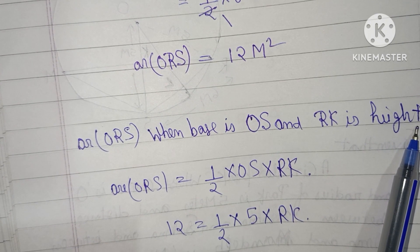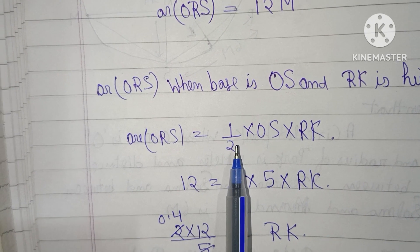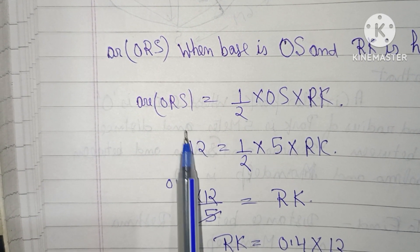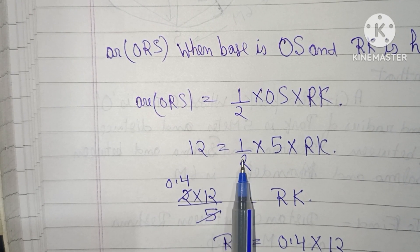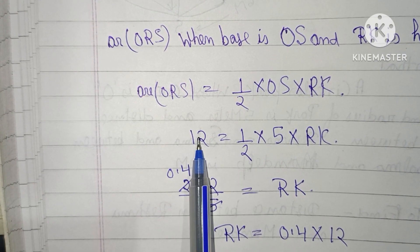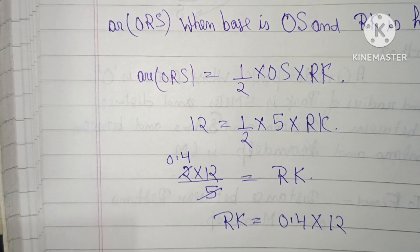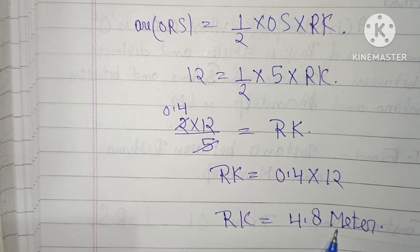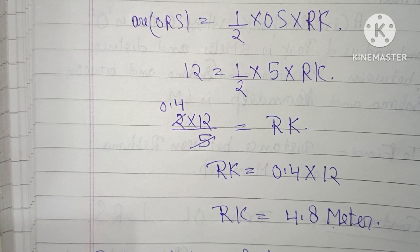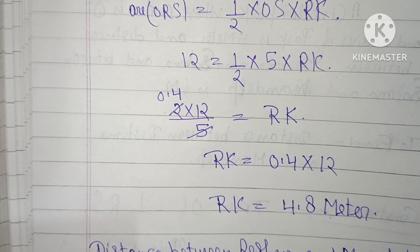Area of triangle ORS when OS is base and RK is height: 12 equals one-half into 5 into RK. Solving, RK equals 12 times 2 upon 5, which equals 4.8 meters.